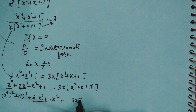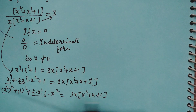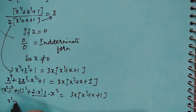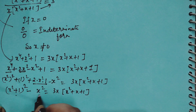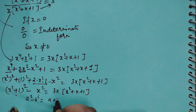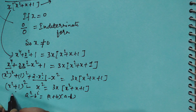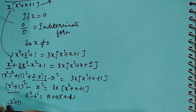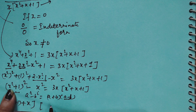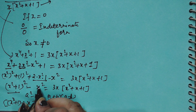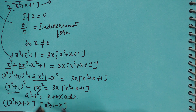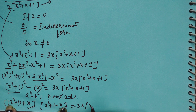So the left side is (x² + 1)² − x². Applying the a² − b² = (a+b)(a−b) identity, with a = x²+1 and b = x, we get (x²+ x + 1)(x² − x + 1). The right-hand side remains 3x(x² + x + 1).